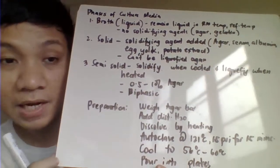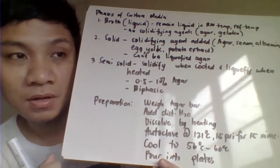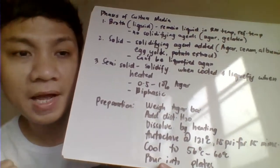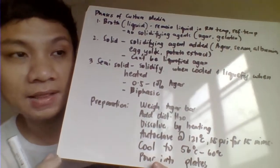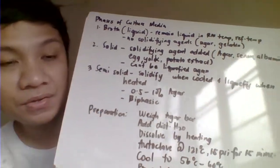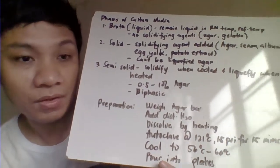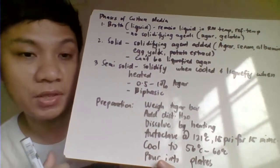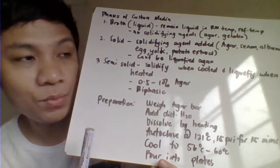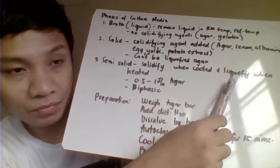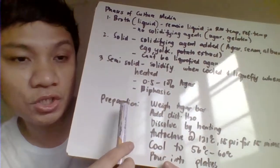Solid culture media is solidified by adding agents like agar, gelatin, albumin, serum, egg yolk, or potato extract. Once solidified after autoclaving and cooling, it cannot be liquefied again. Semi-solid culture media is biphasic — it solidifies when cooled and liquefies when heated — and contains a solidifying agent at a very low concentration of approximately 0.5 to 1 percent.